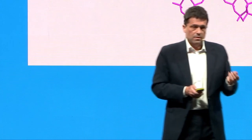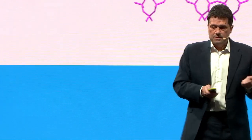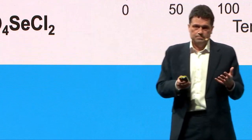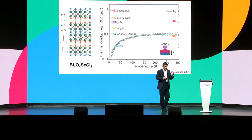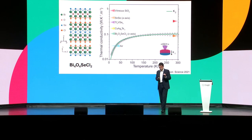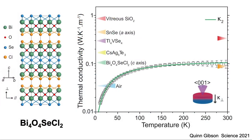How do we tackle that challenge today? Here is an example from our own work: a new materials structure with composition Bi₄O₄SeCl₂. The structure is shown on a slide, and this material has the lowest thermal conductivity of any inorganic material.